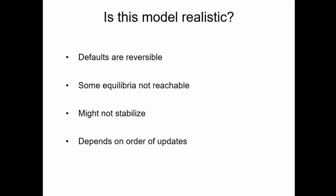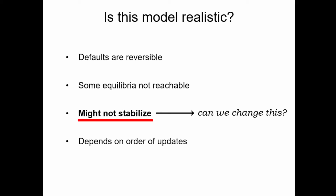Besides studying all these properties of the model, it's also worth asking whether this sequential model is realistic. Looking at the basic properties, most of them do not sound too bad for practice — it's only the infinite running time that seems very unreasonable. So it is natural to wonder if we can come up with a different sequential model variant that does not have this property.